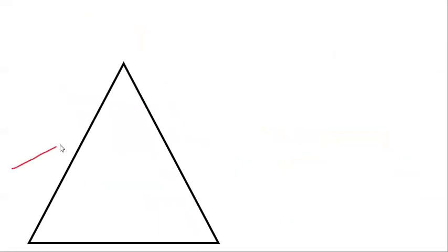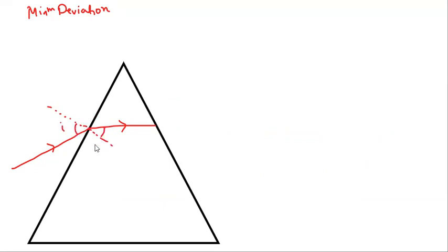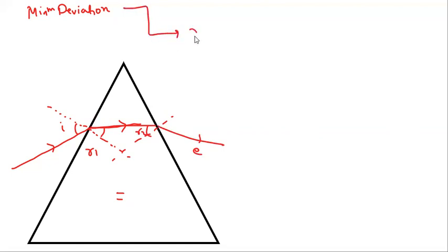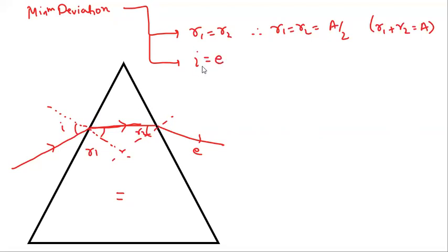Now let us discuss minimum deviation — what is the condition when deviation through the prism will be minimum. Remember that when deviation is minimum, the refracted ray will be parallel to the base. At minimum deviation, r1 will be equal to r2, which means r1 = r2 = A/2, because r1 + r2 = A. Similarly, at minimum deviation, i will be equal to e.